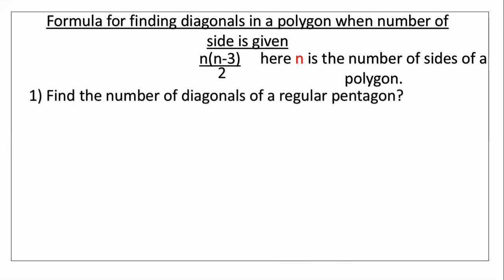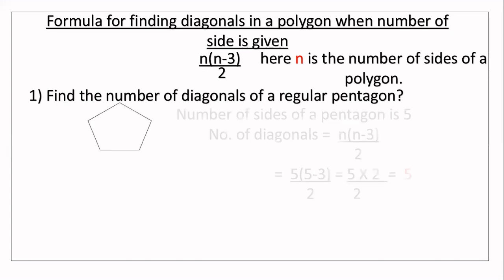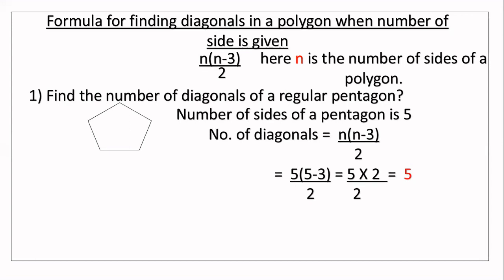Find the number of diagonals of a regular pentagon. As we know, a pentagon has five sides, so n = 5. Number of diagonals = n(n − 3) ÷ 2 = 5(5 − 3) ÷ 2 = 5 × 2 ÷ 2 = 10 ÷ 2 = 5. So there are 5 diagonals in a pentagon. You can see in the figure that 5 diagonals are drawn inside.